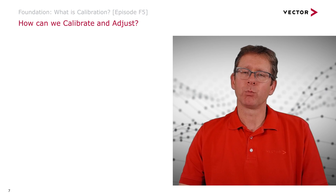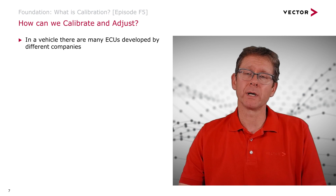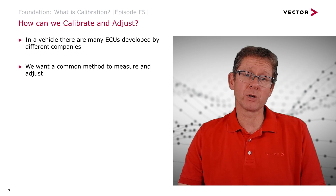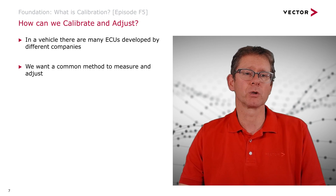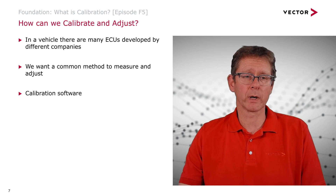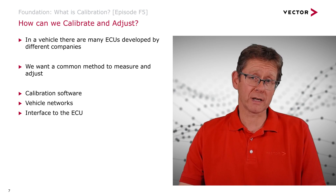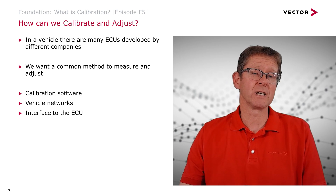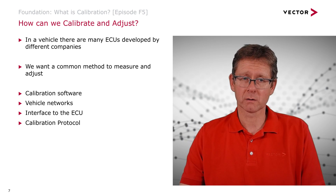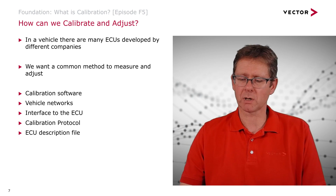So how can we calibrate and adjust values? In a vehicle there are many ECUs developed by different companies, so we want a common method for measurement and calibration. We need some other components as well: measurement and calibration software, a vehicle network to connect to the ECU, an interface from our software to the ECU, a calibration protocol that defines how we do it, and an ECU description file — and we'll explain these as the episode goes on.